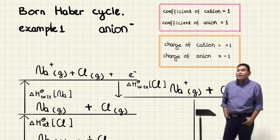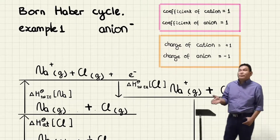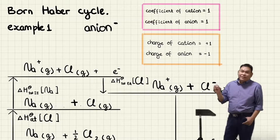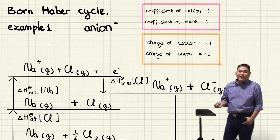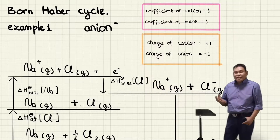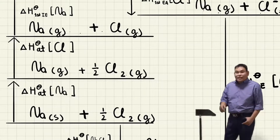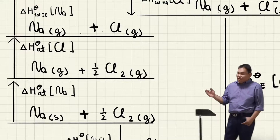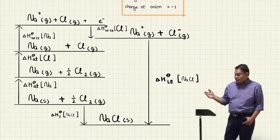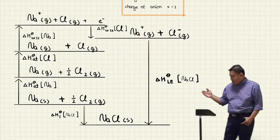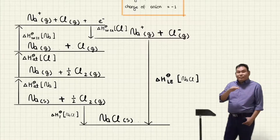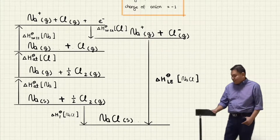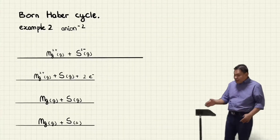We check the coefficient of the cation and the anion — both are one, so we don't need to multiply any delta H. The charge of the cation is plus one, meaning we only need the first IE. The charge of the anion is minus one, meaning we only need the first EA. Don't forget to label all substances: atomization of sodium, atomization of chlorine, first IE of sodium, first EA of chlorine, and delta H lattice energy of sodium chloride.